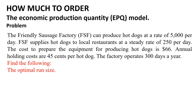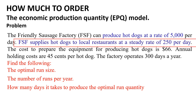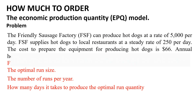Find the following: the Optimal Run Size, the Number of Runs Per Year, and how many days it takes to produce the optimal run quantity. Note that to apply the Economic Production Quantity model, the production rate must be more than the usage or sell rate.